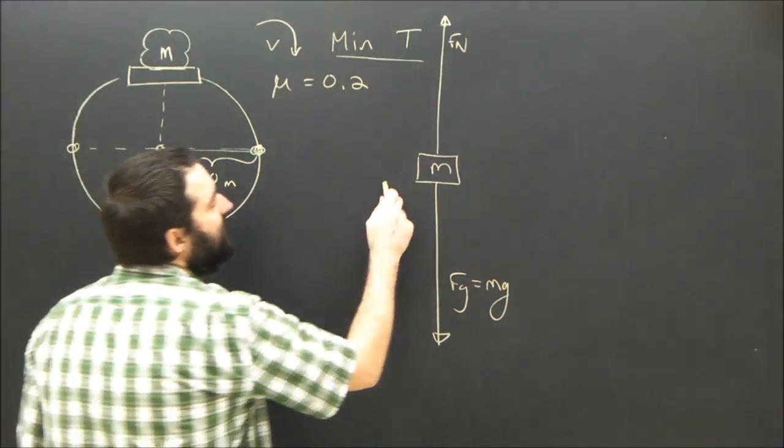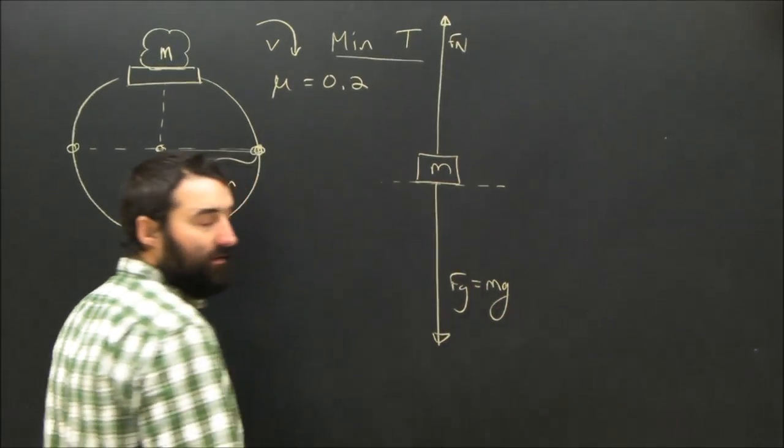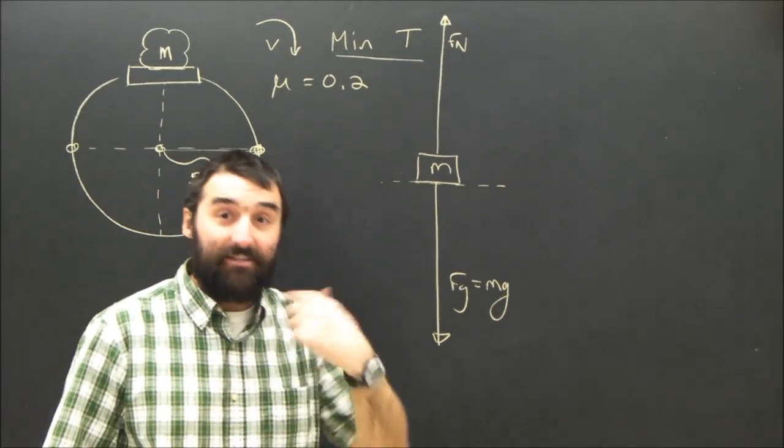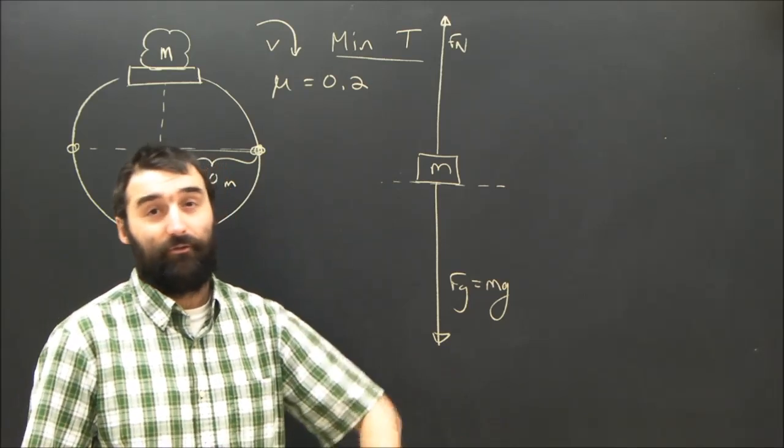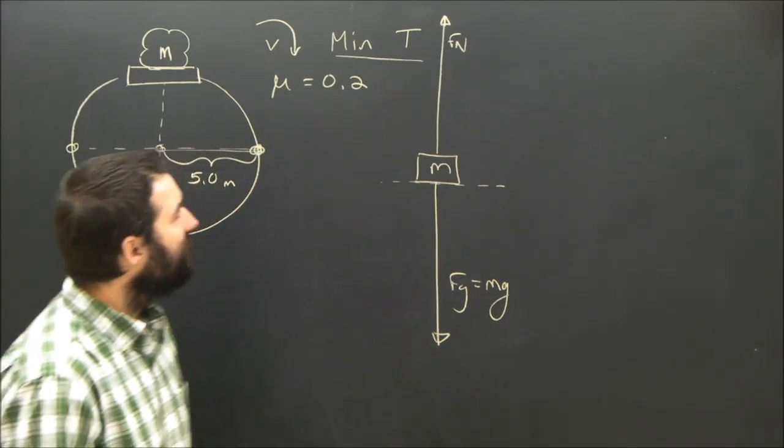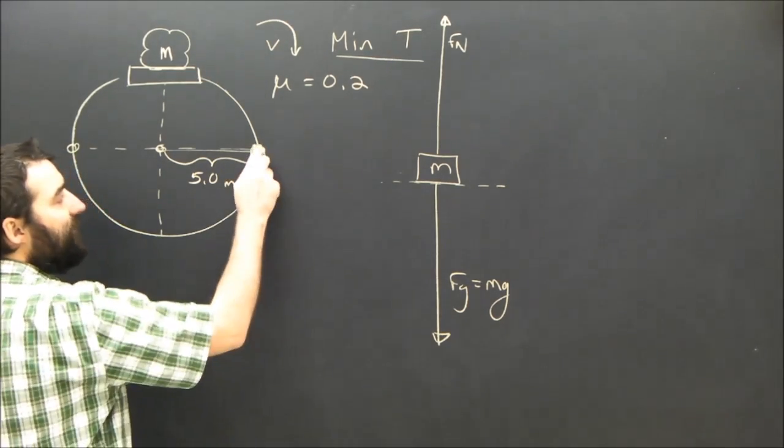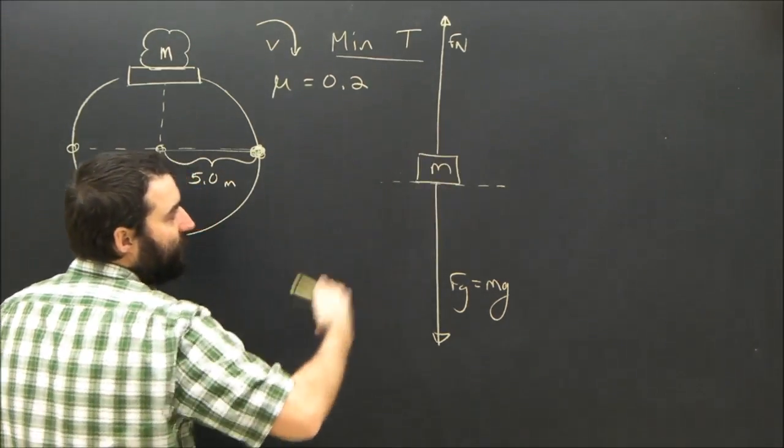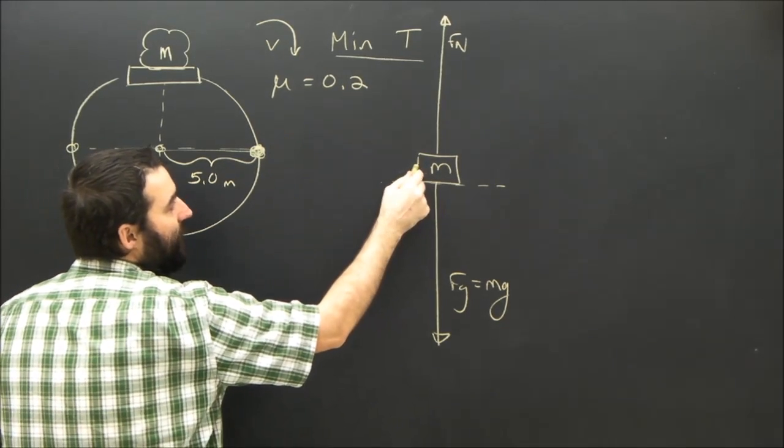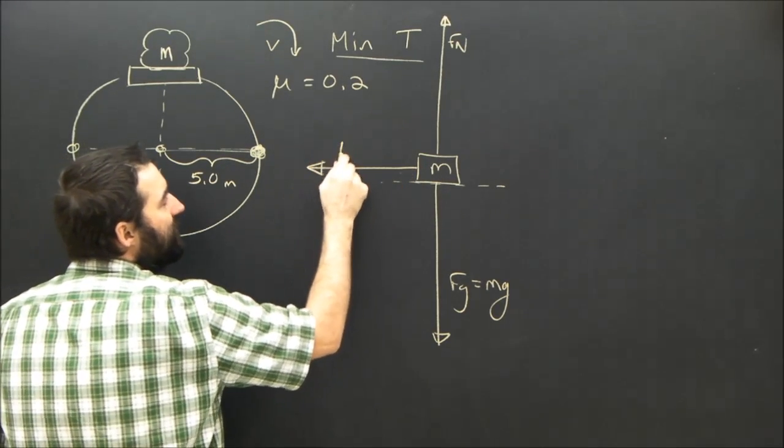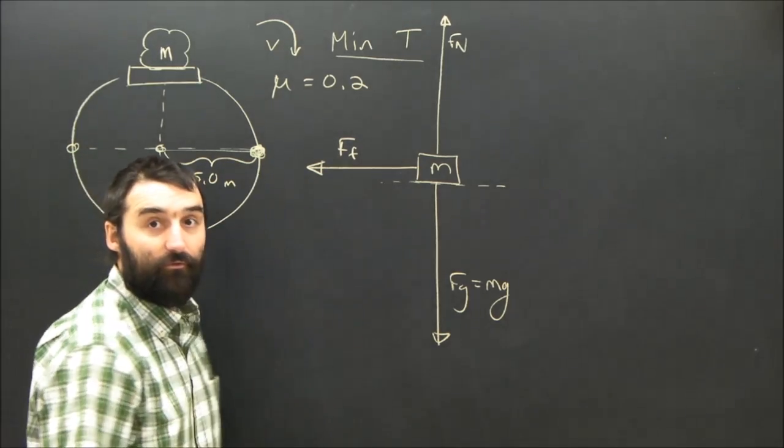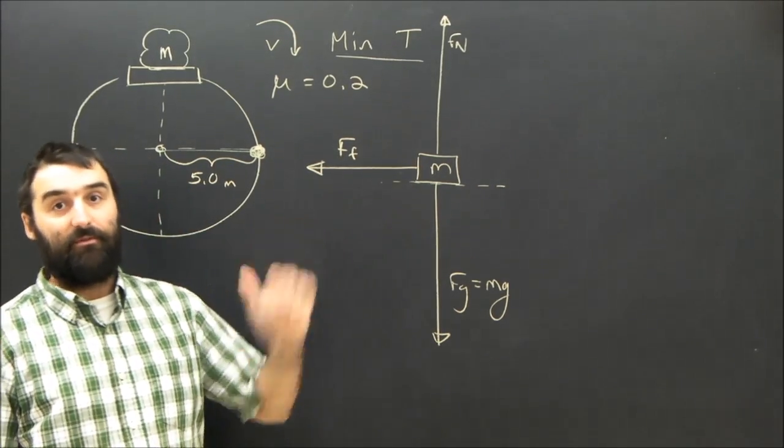This thing is resting on the Ferris wheel. Is anyone pushing it? No, there's no applied force, there's no rope, there's no tension. So, the only force left is friction, and the question is, which way is friction? Well, we're drawing the free body diagram of the object here. It's moving in a circle this way. The center of the circle is that way. The only force that could possibly provide the centripetal force is friction. It's got to be towards the center.